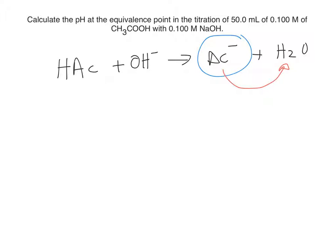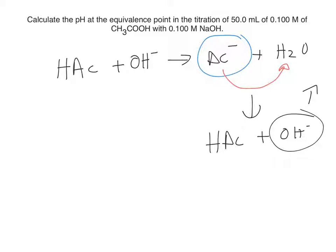That base can react with water, and because it's a base, it's going to remove one hydrogen. So the product of this reaction is acetic acid plus OH⁻. And this is going to increase the pH. That's why the equivalence point of a titration between a weak acid and a strong base is higher than 7.